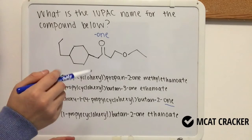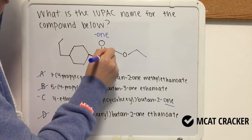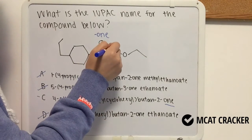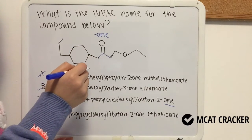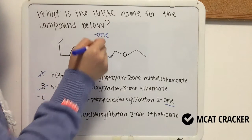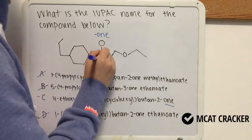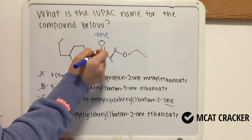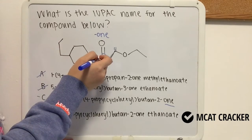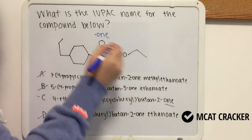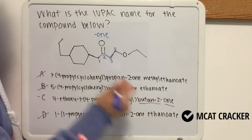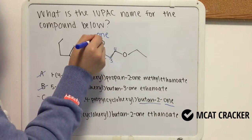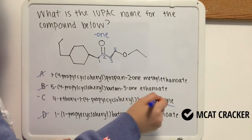Now we want to name the principal chain. Our principal chain is composed of four carbons. We need to figure out which end to start numbering from. Remember that you want the carbon in the ketone to have the lowest number. Naming it so that the ketone carbon is at position two is correct, because if we named it from the other side it would be position three, and two is lower than three. This corresponds to answer choice C, where 'butane' indicates four carbons and 'two' tells us the ketone carbon is at position number two.